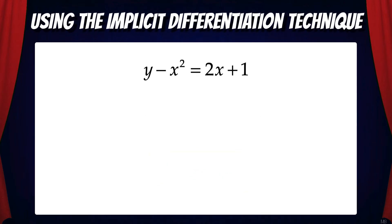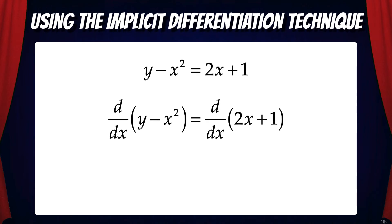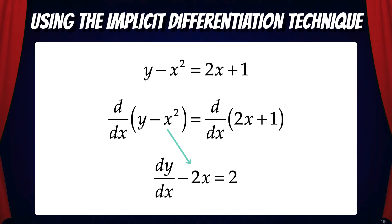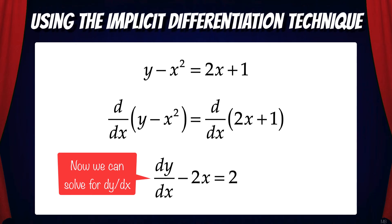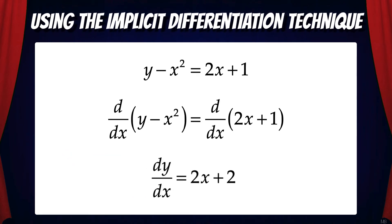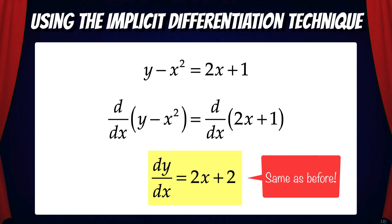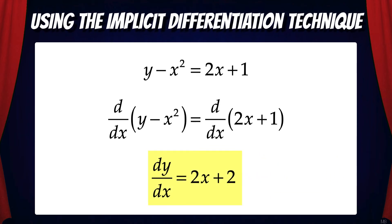If the original function was rearranged to be y minus x squared equals 2x plus 1, we could still apply the same technique. We take the derivative with respect to x on both sides. d/dx of y equals dy/dx, d/dx of negative x squared is negative 2x, and d/dx of 2x plus 1 is just 2. Solving for dy/dx gives us dy/dx equals 2x plus 2 — the same answer as before. What we did here was treat y as an implicit function and took the derivative of y with respect to x.